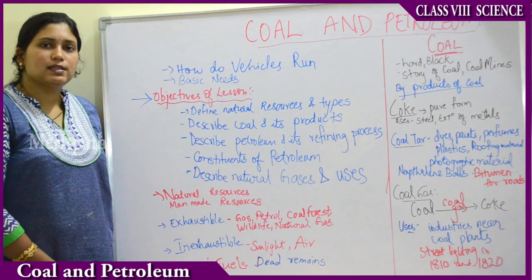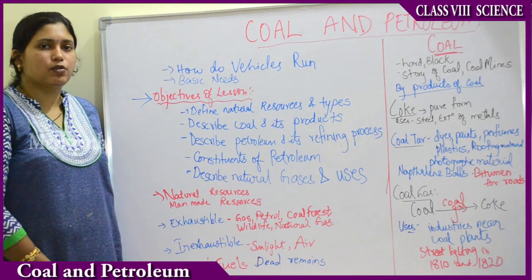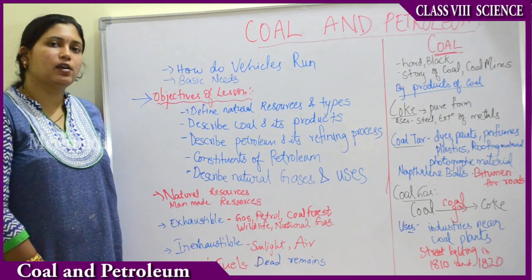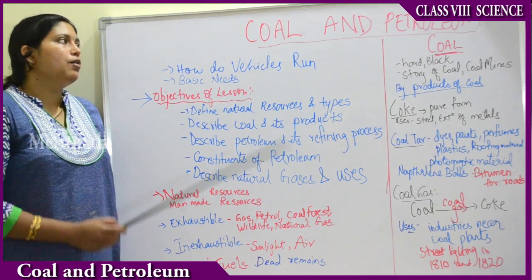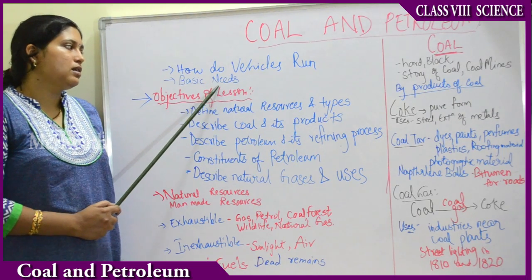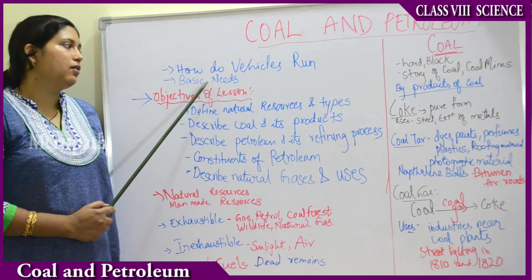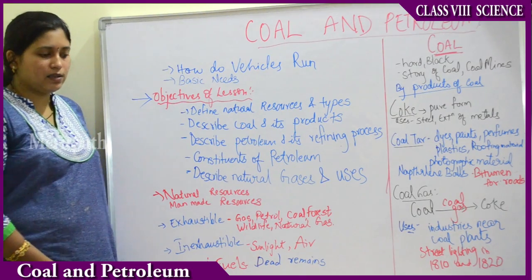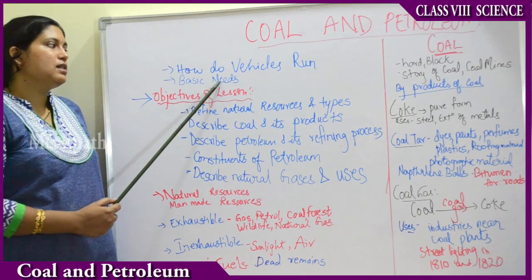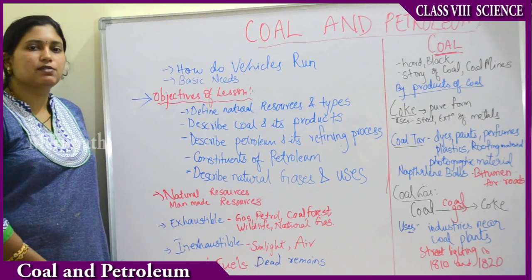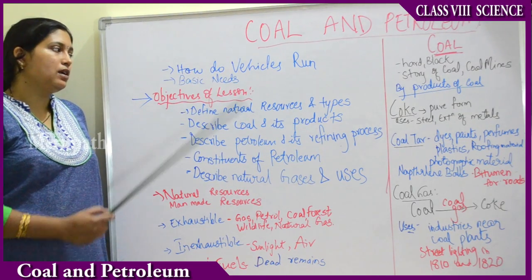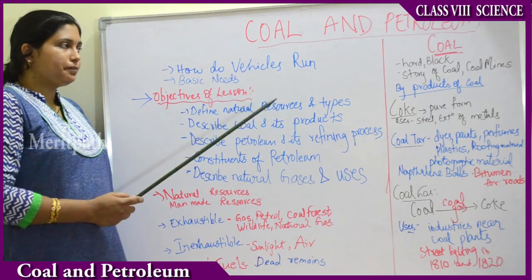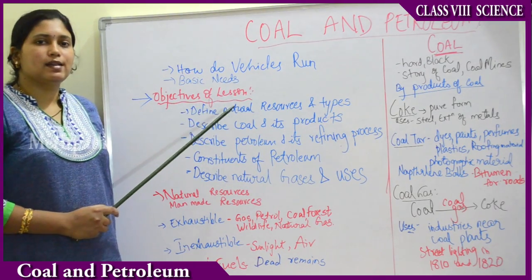Vehicles run basically on fuels like petrol, diesel, sometimes kerosene, or CNG — that is compressed natural gas. So we can also say petrol, diesel, and all these things can be treated as basic means of life, like food, water, and air are the basic means of life. Without these we cannot survive. Without vehicles we cannot travel from place to place.